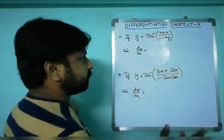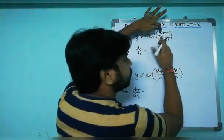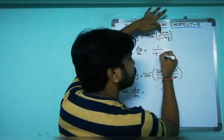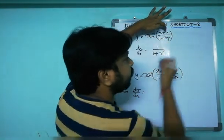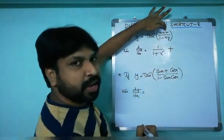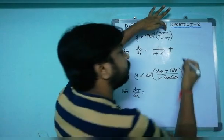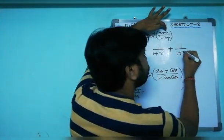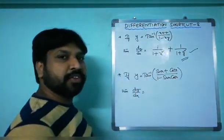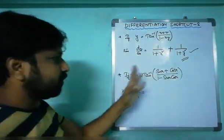Coming to multiple examples: if y equals tan⁻¹((x plus y)/(1 minus xy)), then by the shortcut formula, derivative of x is 1, giving 1/(1 plus x²). There is a plus sign, so keep it positive. Differentiating y with respect to y gives 1/(1 plus y²). That's your answer.